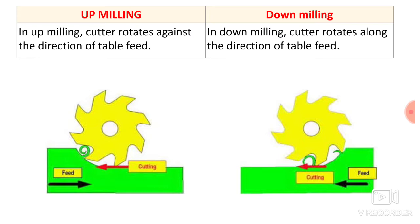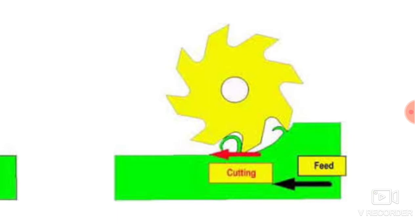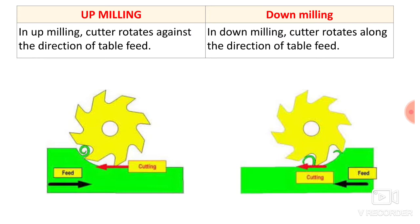In down milling, the cutter rotates along the direction of table feed. Here the cutter is rotating clockwise and the feed is given towards the left-hand side — the cutter and the workpiece are moving in the same direction. Such a process is known as down milling. So this is the major difference: in up milling the cutter rotates against the table feed direction, whereas in down milling the cutter rotates along the table feed direction.